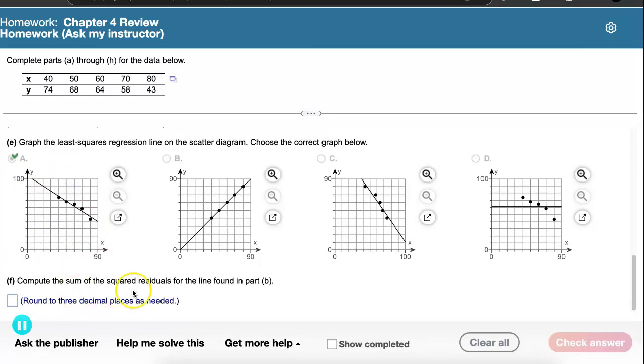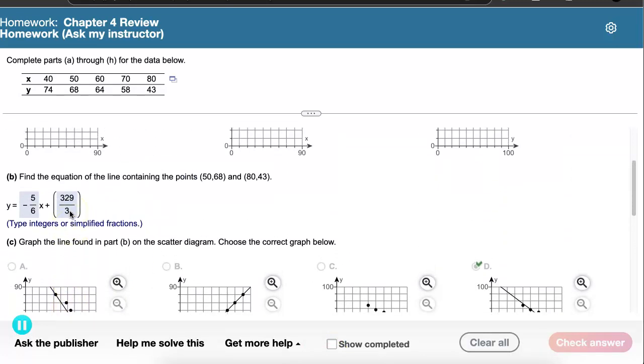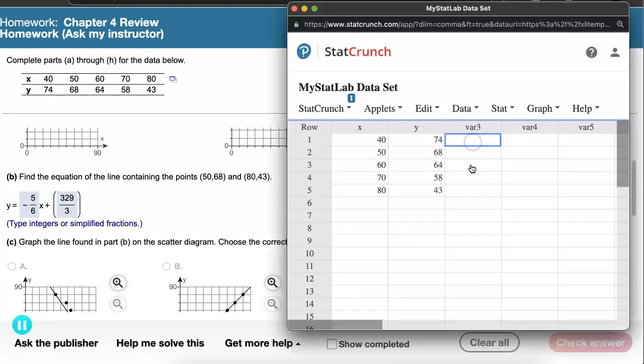Next, we're asked to compute the sum of the squared residuals that we found for the line in Part B, and this is the line that we found by hand, this one here, okay, in Part B. So I can use StatCrunch to kind of help out with this process. I could do it by hand. I do want to link another video from Khan Academy that does a good job of just explaining the concept of residuals, so I encourage you to watch that as well. But one way or the other, we've got to go through and find the residuals, square them, and then sum them for this particular line. And I'm choosing to do StatCrunch just to help me organize this process.